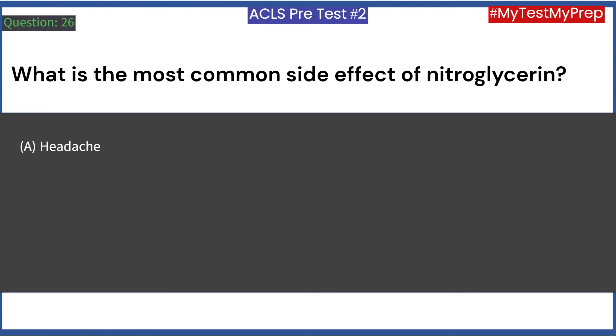What is the most common side effect of nitroglycerin? A. Headache. B. Dizziness. C. Fatigue. D. Diarrhea. Answer: A. Headache.